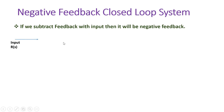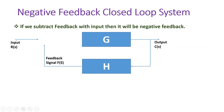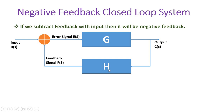Let us see the block diagram for negative feedback. We have an input signal that is given to the error detector. The second signal to this error detector is the feedback signal, which comes from the output side. The error signal is the input to system G, and H is the gain of the feedback. The output of system G is C(S), and that is the input to system H.